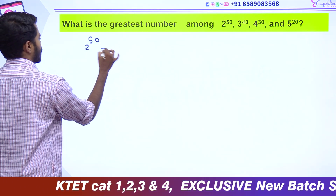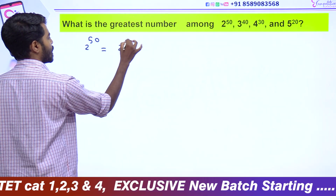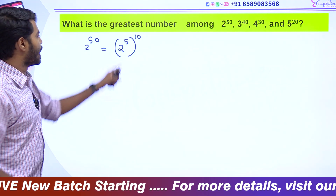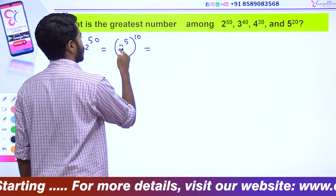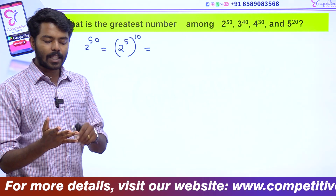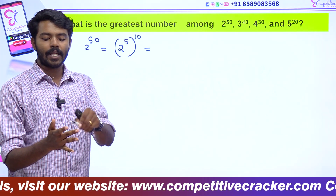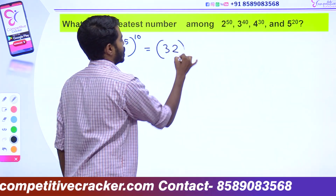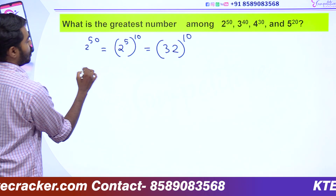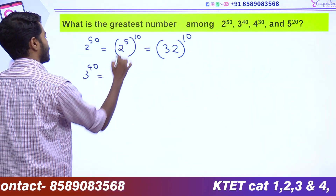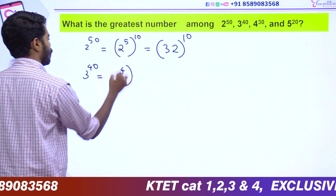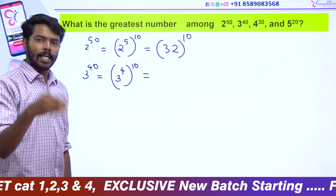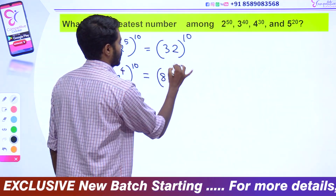The power is equal. 2 raised to 50 becomes 2 raised to 5, then to the 10th — that is 32 raised to 10. 3 raised to 40 becomes 3 raised to 4, then to the 10th — that means 81 raised to 10.